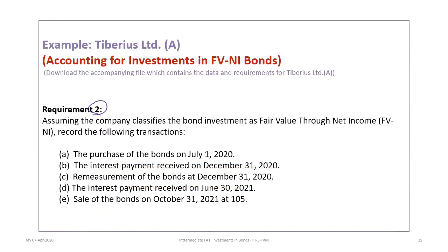Now we move to requirement two. Assuming Tiberius classifies the bond investment as Fair Value through Net Income, or FVNI, we must record the following transactions: the purchase of bonds on July 1, 2020; the interest payment received on December 31, 2020; the remeasurement of bonds at December 31, 2020; the interest payment received on June 30, 2021; and the sale of the bonds on October 31, 2021 at 105.